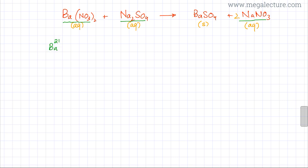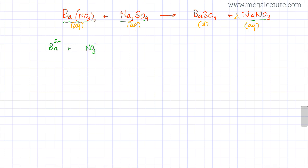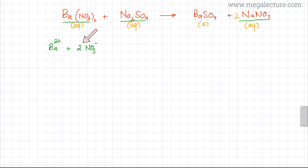Starting with barium nitrate: barium is in group 2, so it has a charge of 2+, and the other ion is nitrate, NO₃⁻. There would be two NO₃⁻ ions. When they are in scattered form, the two nitrate ions are no longer together, so you write a big 2 as a coefficient, indicating two separate nitrate ions.